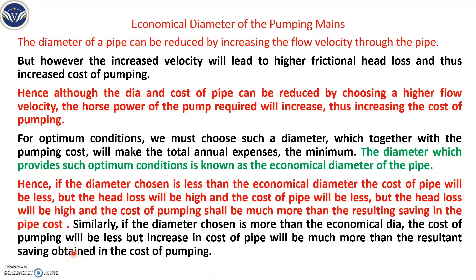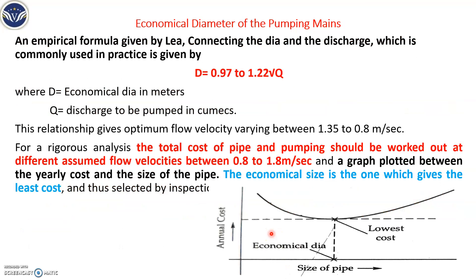Similarly, if your economical diameter is 24 centimeters and you choose more — say a 30 centimeter pipe — the cost of pumping will be less, but it increases the cost of the pipe. Again, the savings will be less in this case as well.